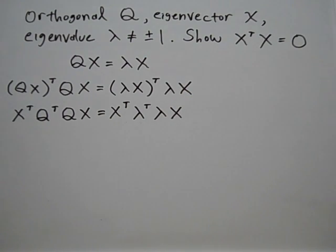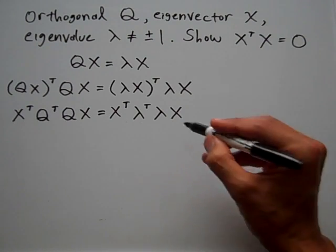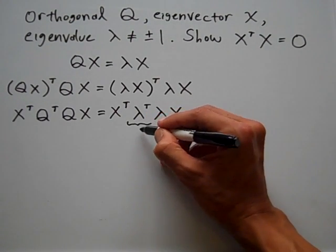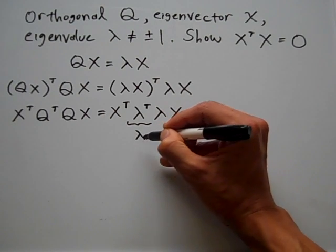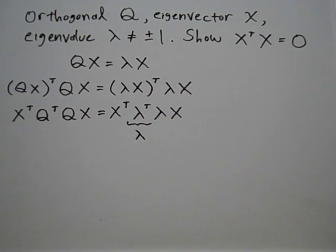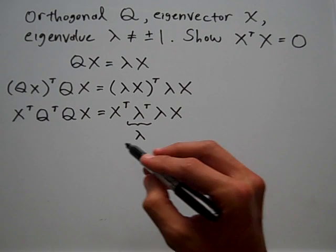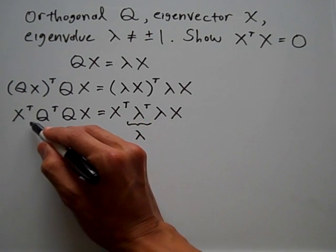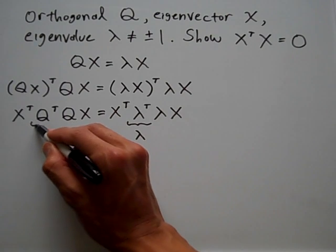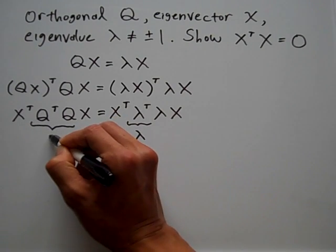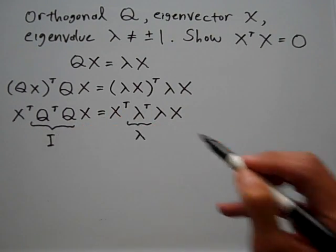Now remember that lambda is a scalar, meaning that the transpose of lambda is simply lambda. Taking the transpose of a scalar does nothing to it. And on the left side, if we remember what it means to be orthogonal, then the transpose of Q times Q will be the identity matrix I.